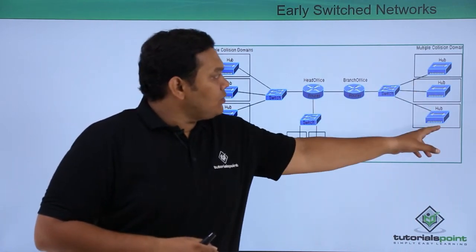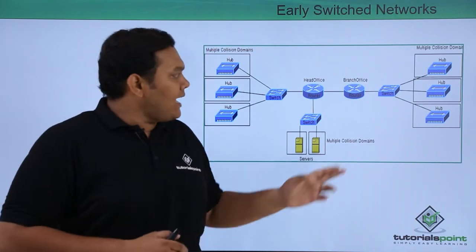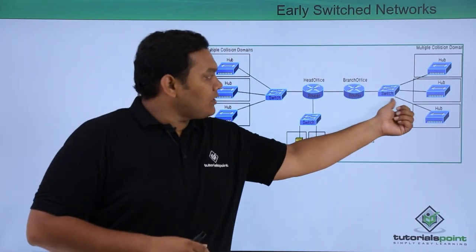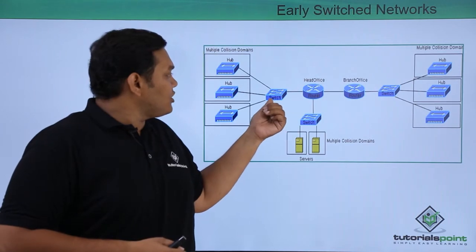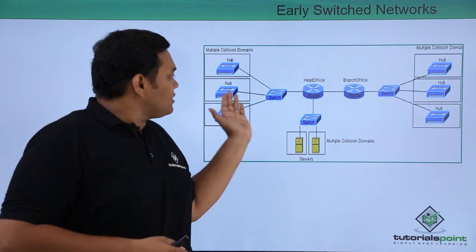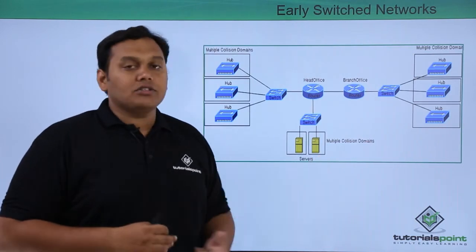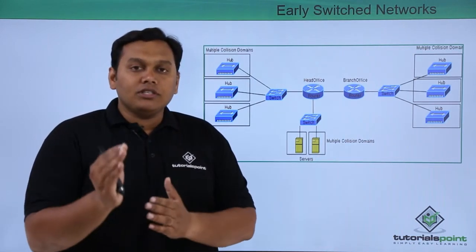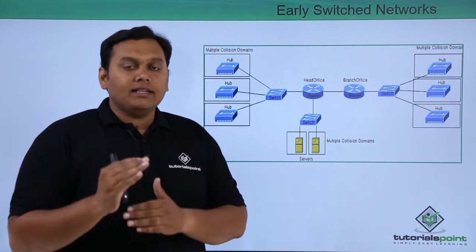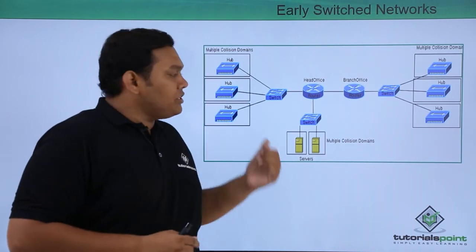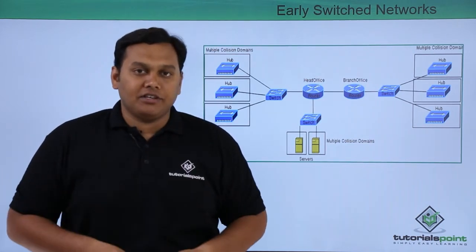A branch office has multiple collision domains as different hubs are connected to the switch. Similarly, the head office is also connected to the switch with hubs to a single port, and the servers are connected to the switch on every single port. In early switched networks, there are multiple collision domains — one for each device.